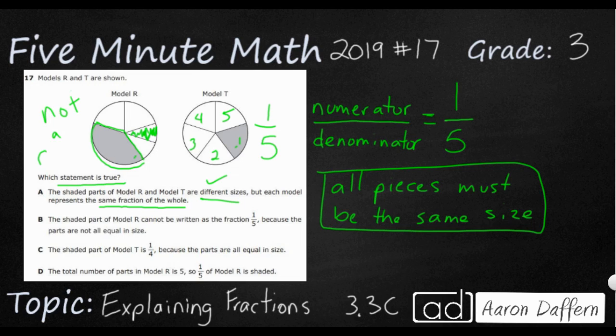Model R is not a fraction. Even though it does have five pieces, even though it's got one piece that is shaded in, it is not a fraction because all pieces are not the same size. This one is way too big. So we can say A is wrong because each model represents the same fraction is incorrect. Because remember, model R is not a fraction.